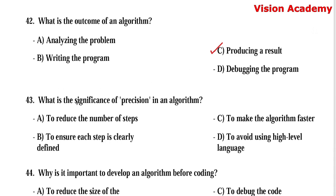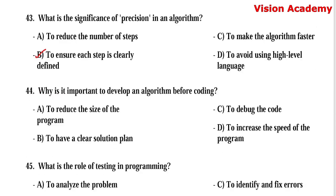Question number 43: What is the significance of precision in an algorithm? Option A, to reduce the number of steps. Option B, to ensure each step is clearly defined. Option C, to make the algorithm faster. Option D, to avoid using high-level language. Here, option B, to ensure each step is clearly defined, is the right answer.